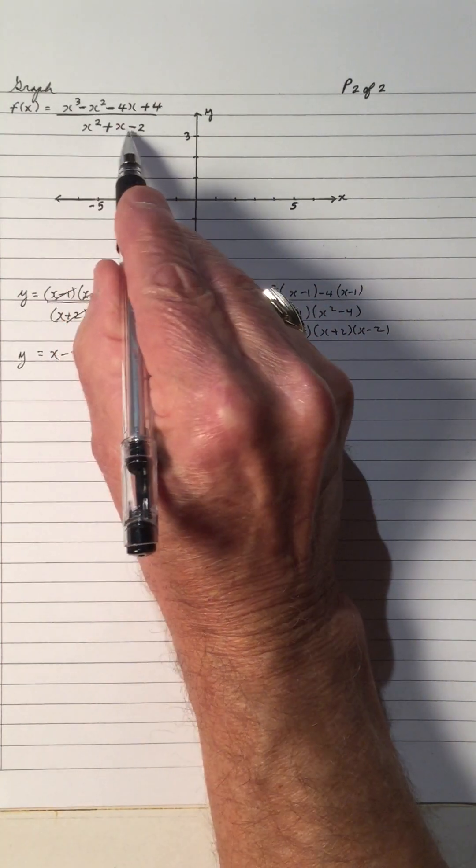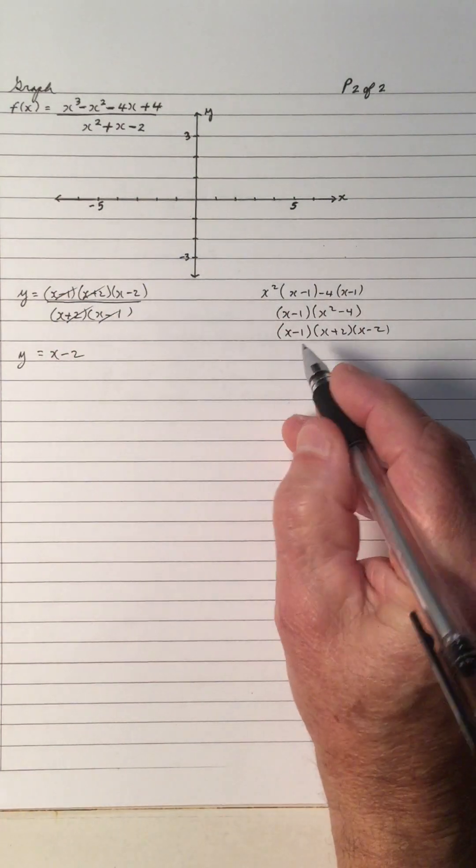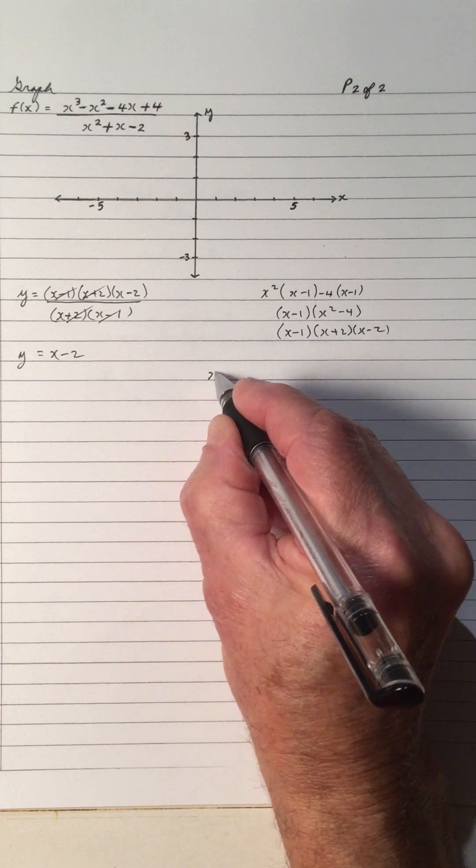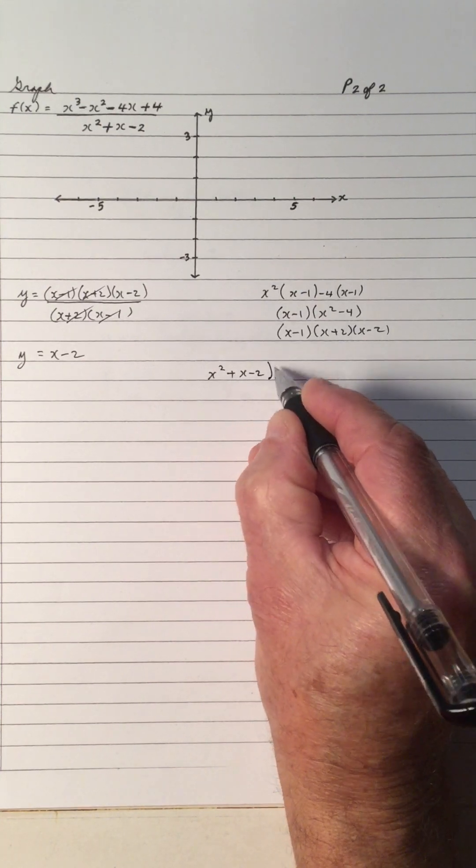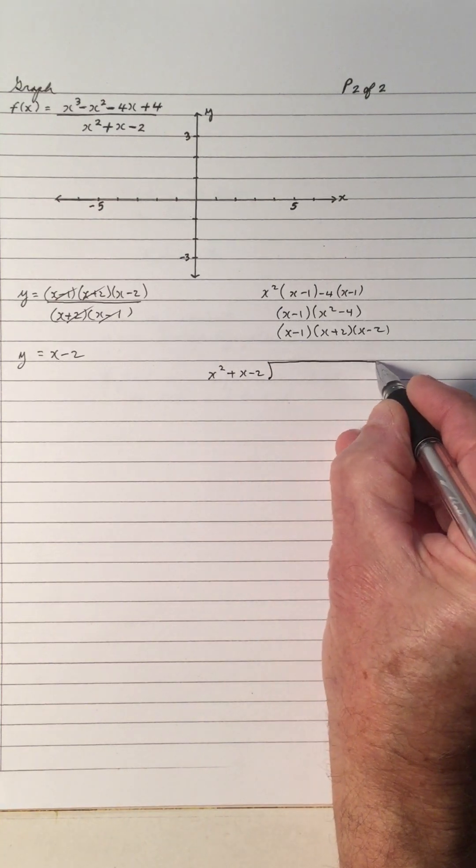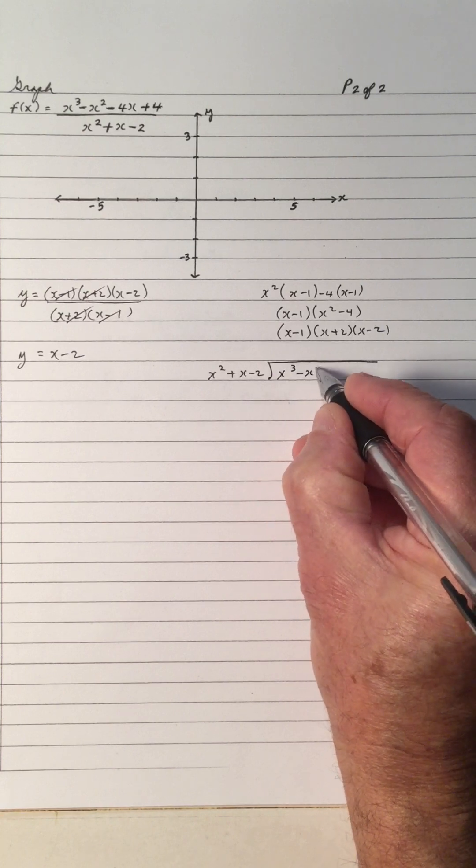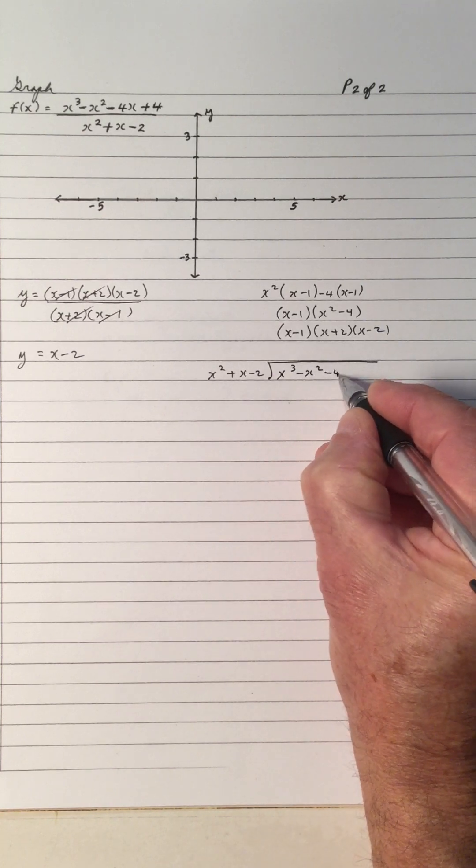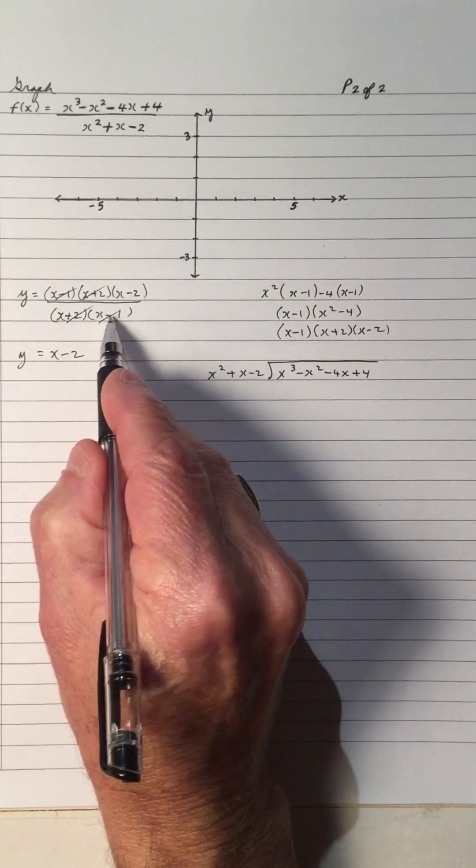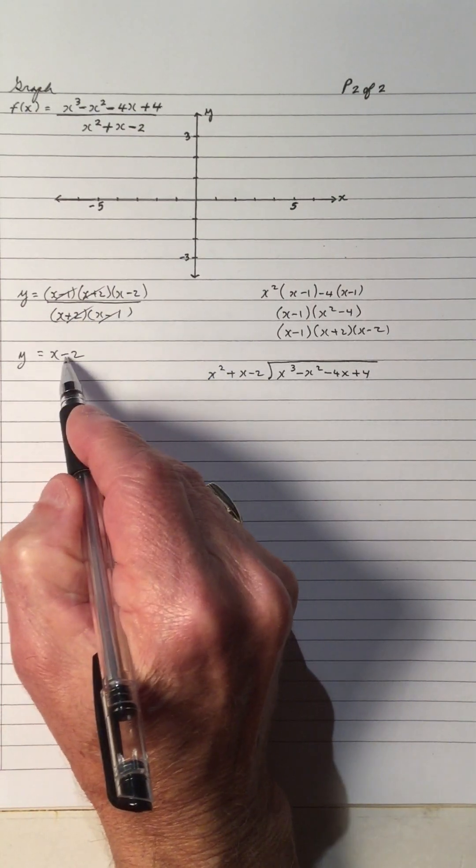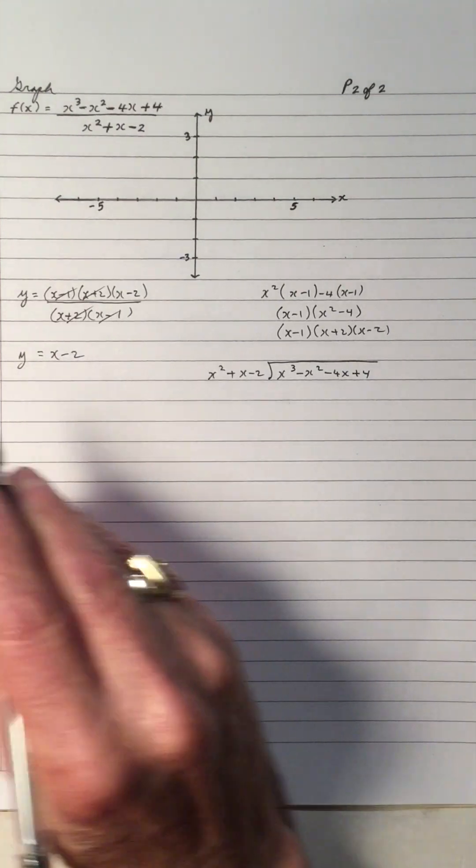So this polynomial on the bottom, it cancels out. Another way to do that would be to take the quadratic that's on the bottom and divide it into the cubic which is on the top, and do it by long division. So I'm just doing this for a bit of practice, but notice we factored the numerator, factored the denominator, and they canceled out, so we're left with this y equals x minus 2, which is a linear.